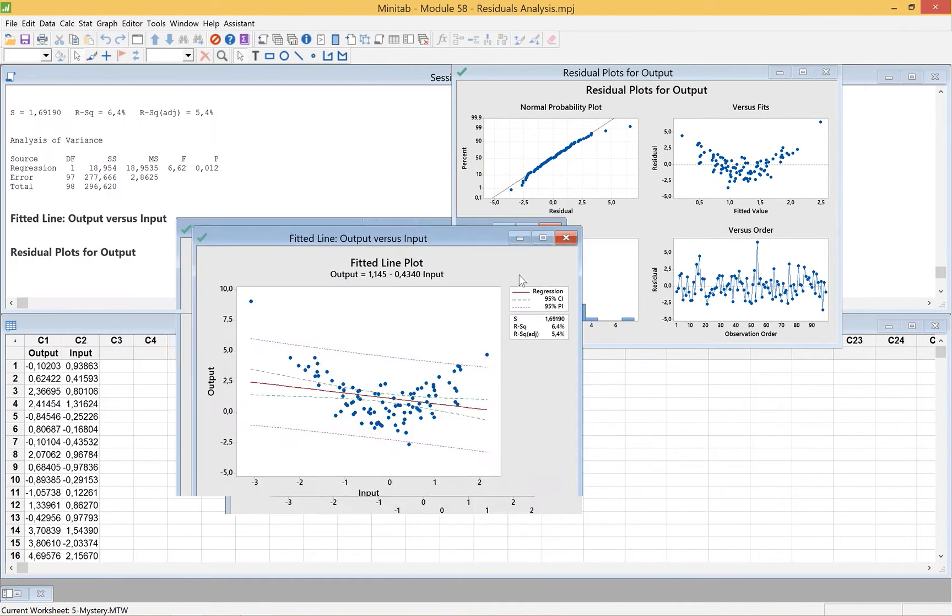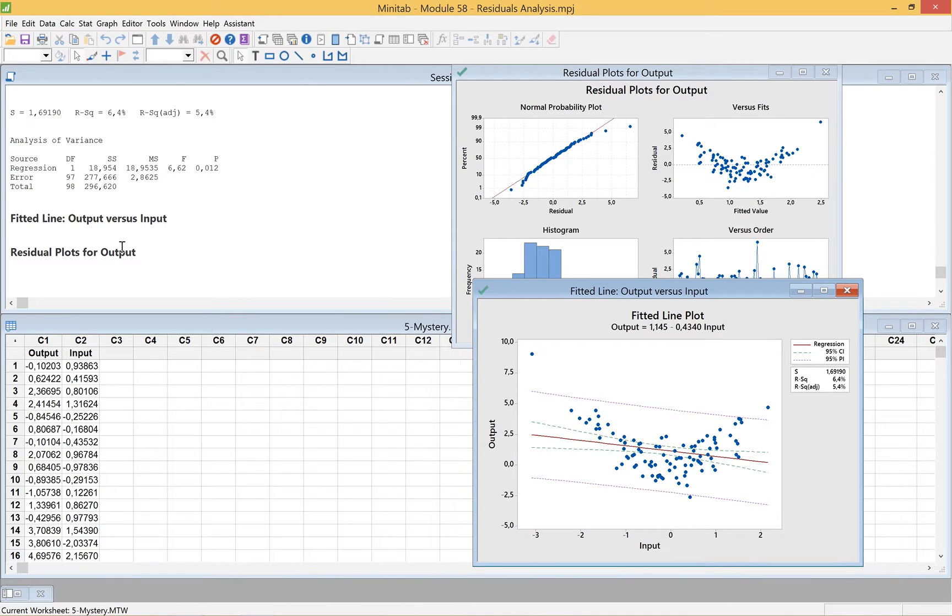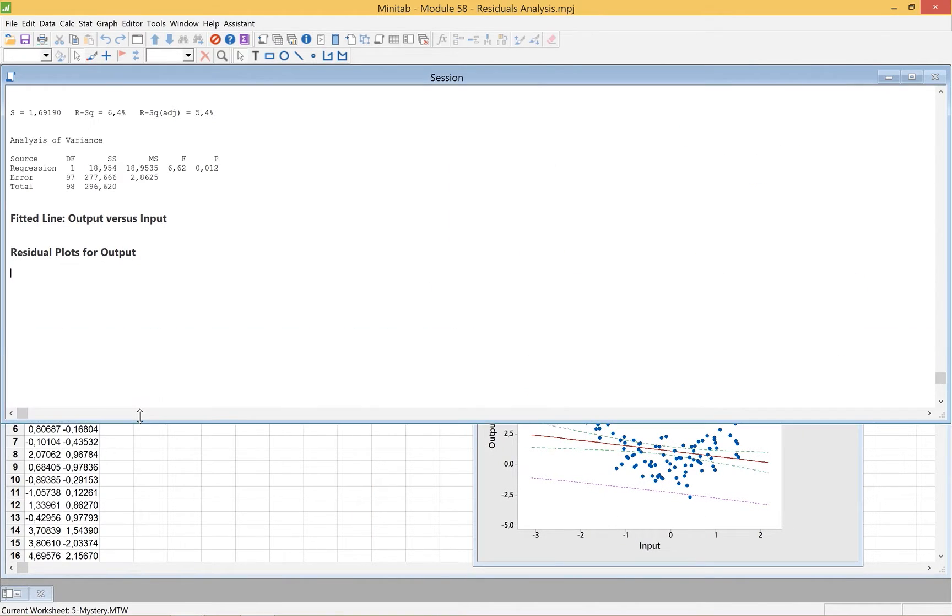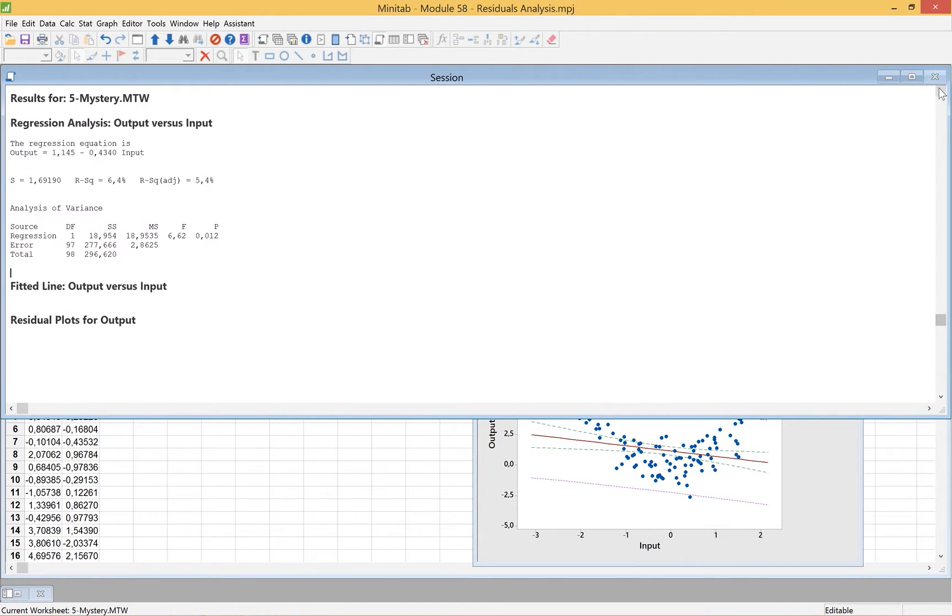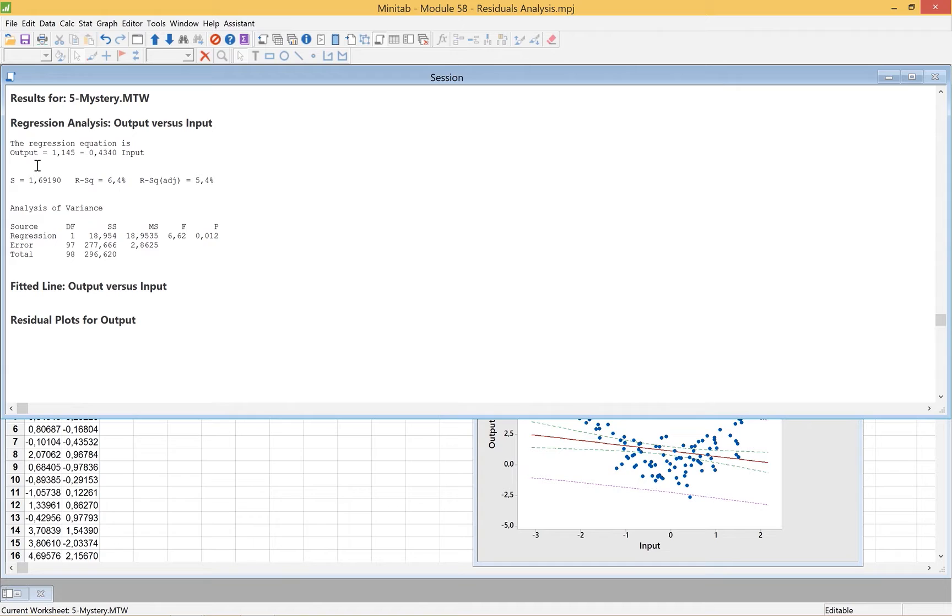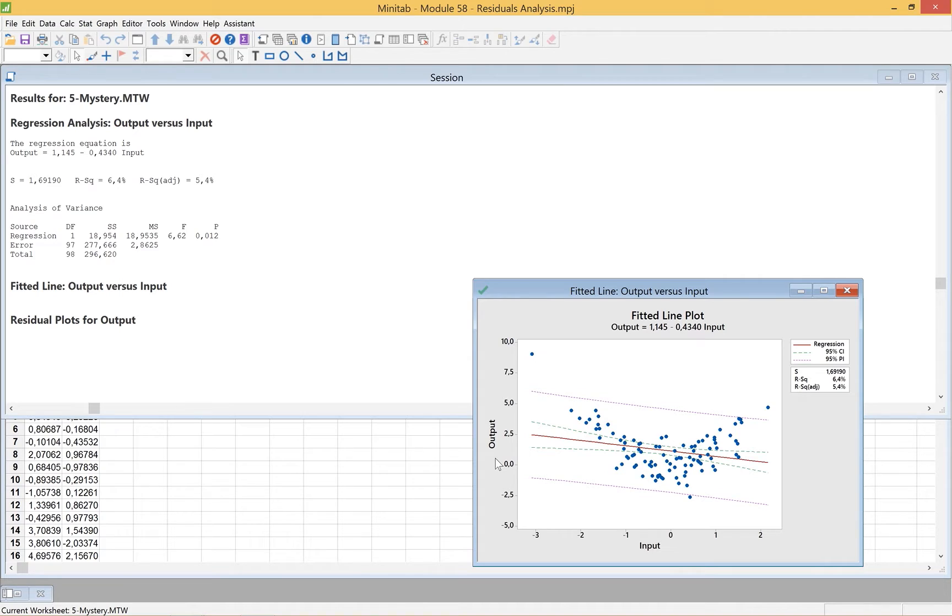Let's take a look at the actual data plots that came out of Minitab in the session window. Here's my equation - there's the y-intercept, there's the slope of the line. There's the R-squared data we have, R-squared adjusted. We see it was actually statistically significant. It tells us that the regression line is statistically significant. But we take a look at this and I just can't help wondering, can't we do something better?